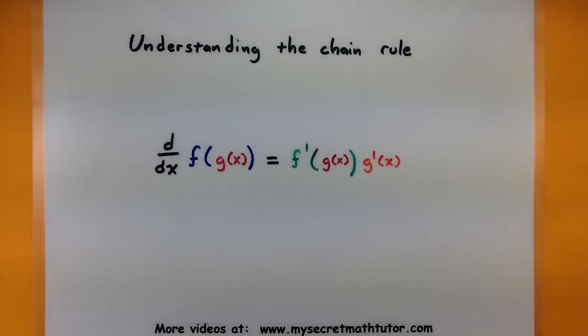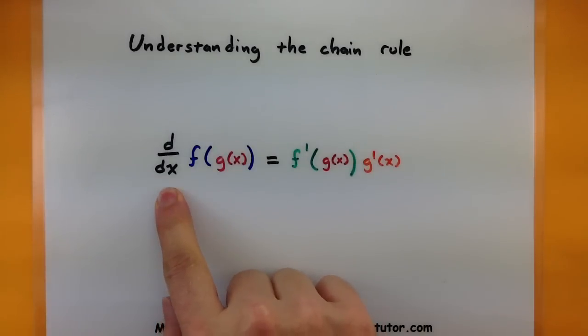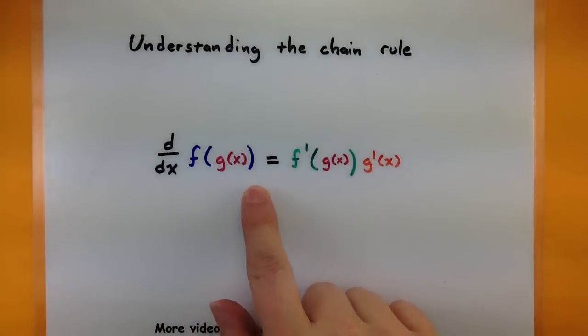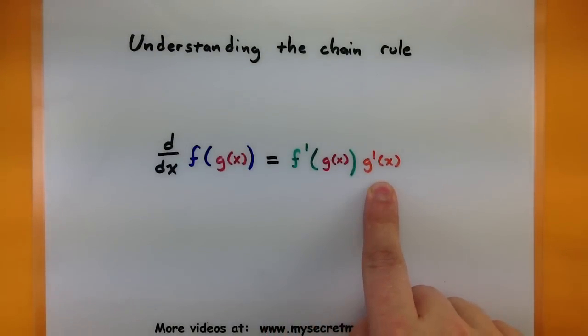So the chain rule is used when you want to take the derivative of a function inside of another function, or the composition of two functions. And here's how it works. If I want to take the derivative of the composition of functions, I need to take the derivative of the outside function, leave the inside as it is, and then multiply it by the derivative of the inside.